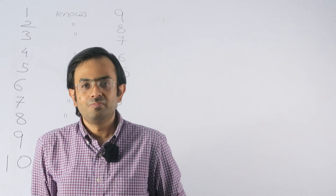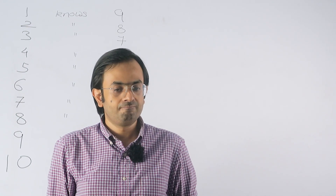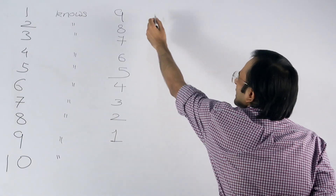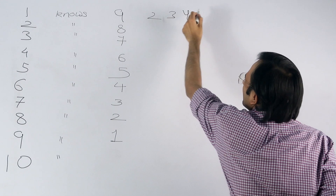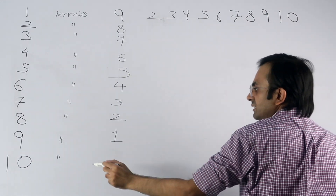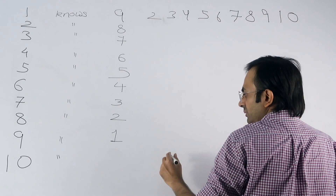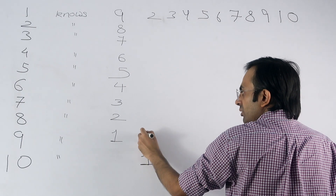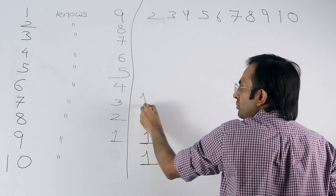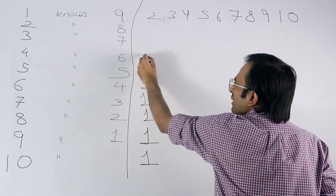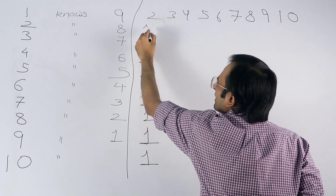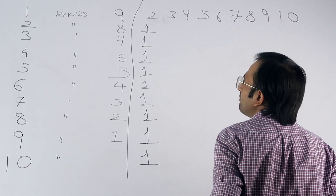Hopefully you paused the video and gave this question a try. Person one knows nine people — this means he knows everybody: two, three, four, five, six, seven, eight, nine, ten. This means all these people also know person one. So ten knows one, nine also knows one, eight also knows one, seven also knows one, six also knows one, five also knows one, two also knows one — everybody knows one.